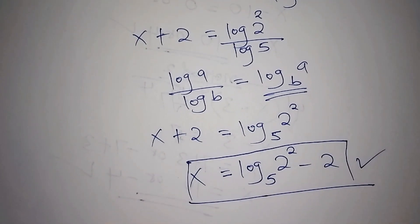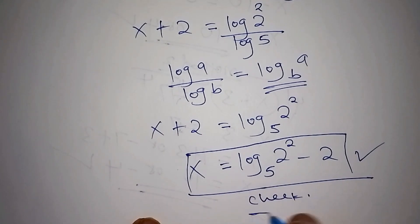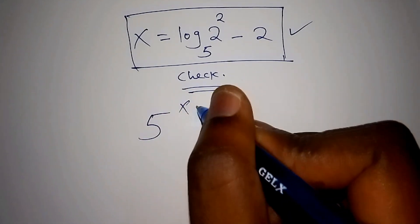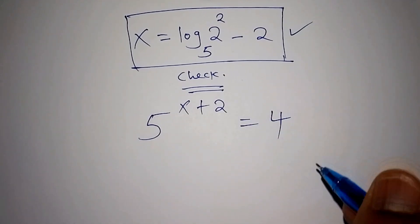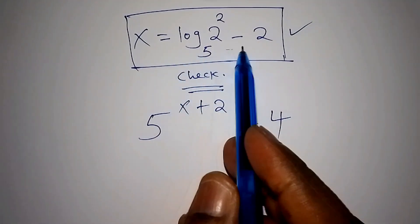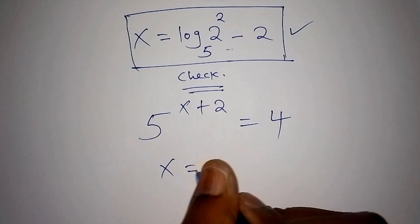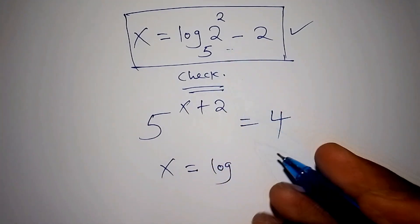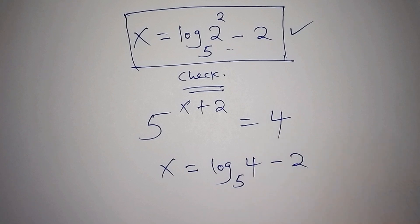We shall now confirm the answer to check if it is indeed correct. Our equation was 5 to the power of x plus 2 is equals to 4. We can also write x as the log of 4 to base 5 minus 2, since 2 to the power of 2 is 4.